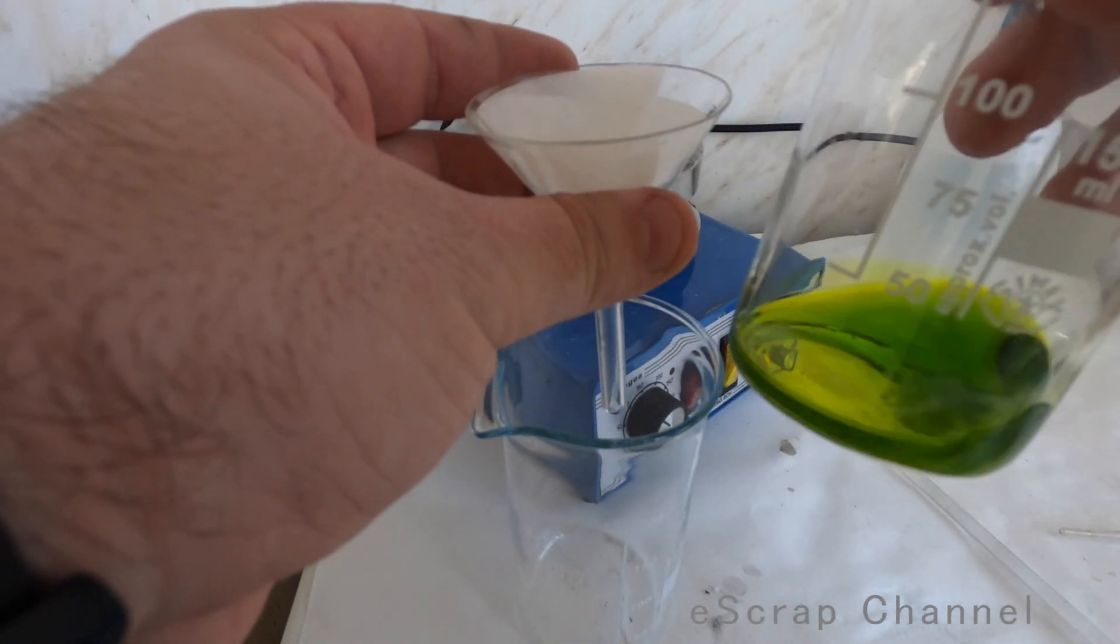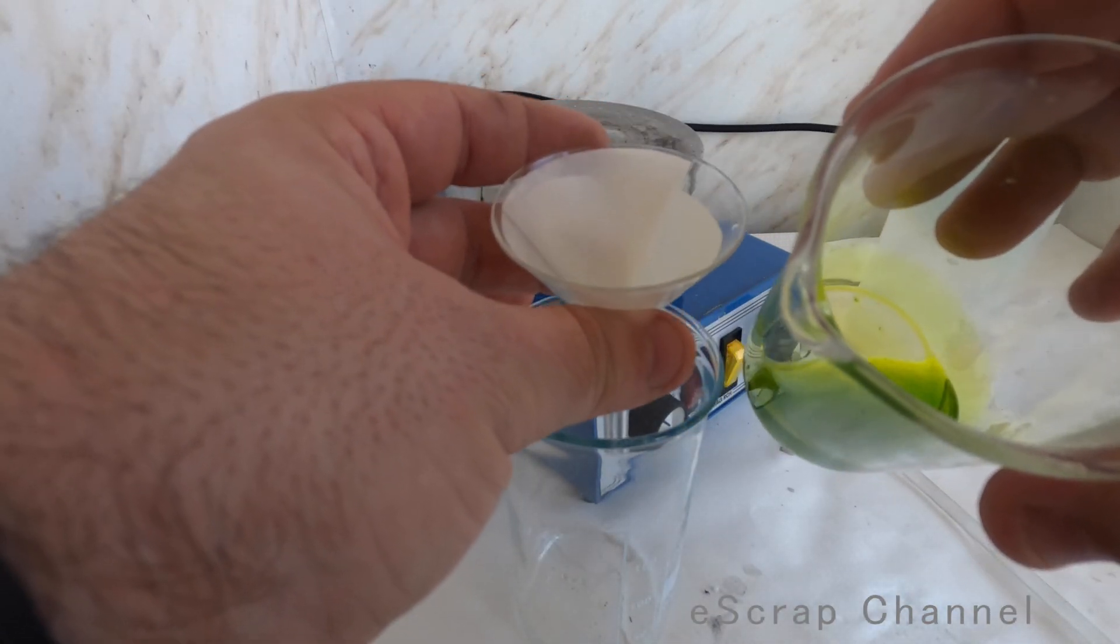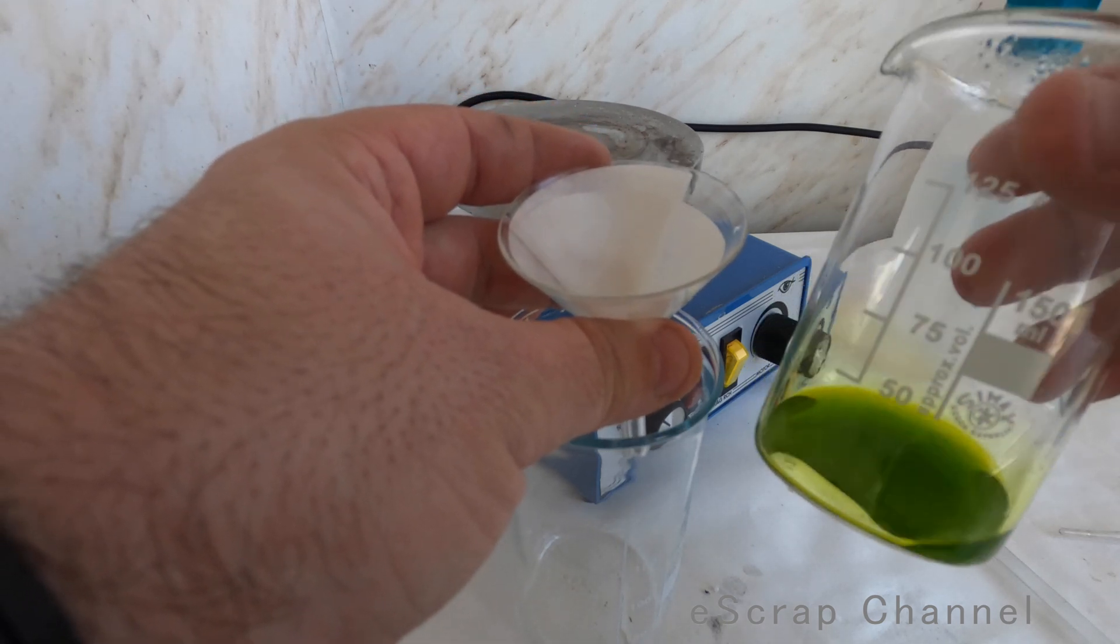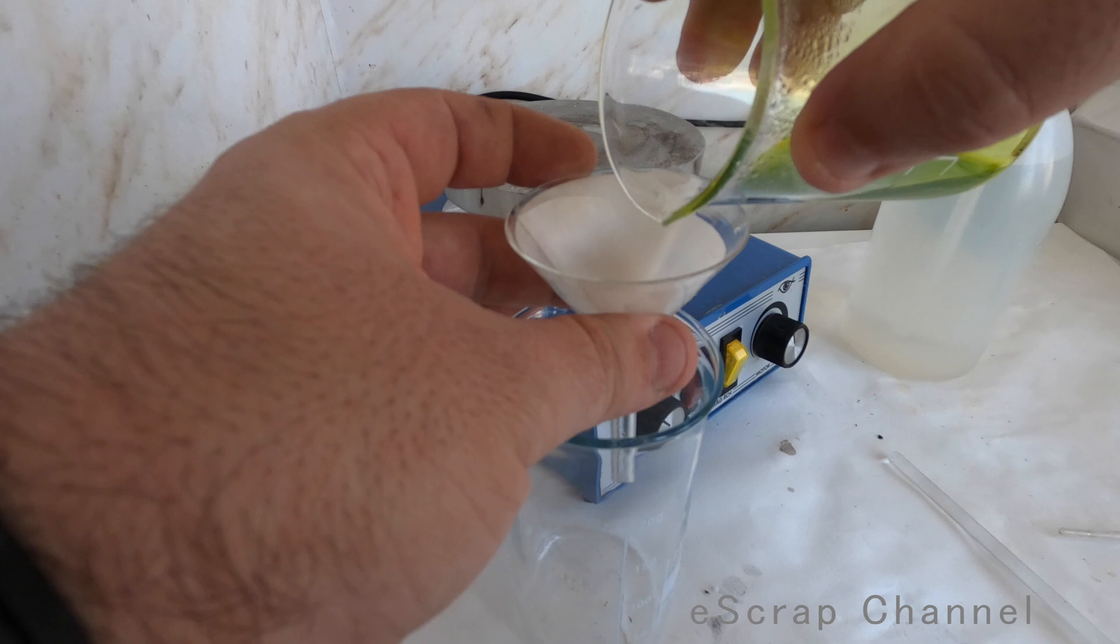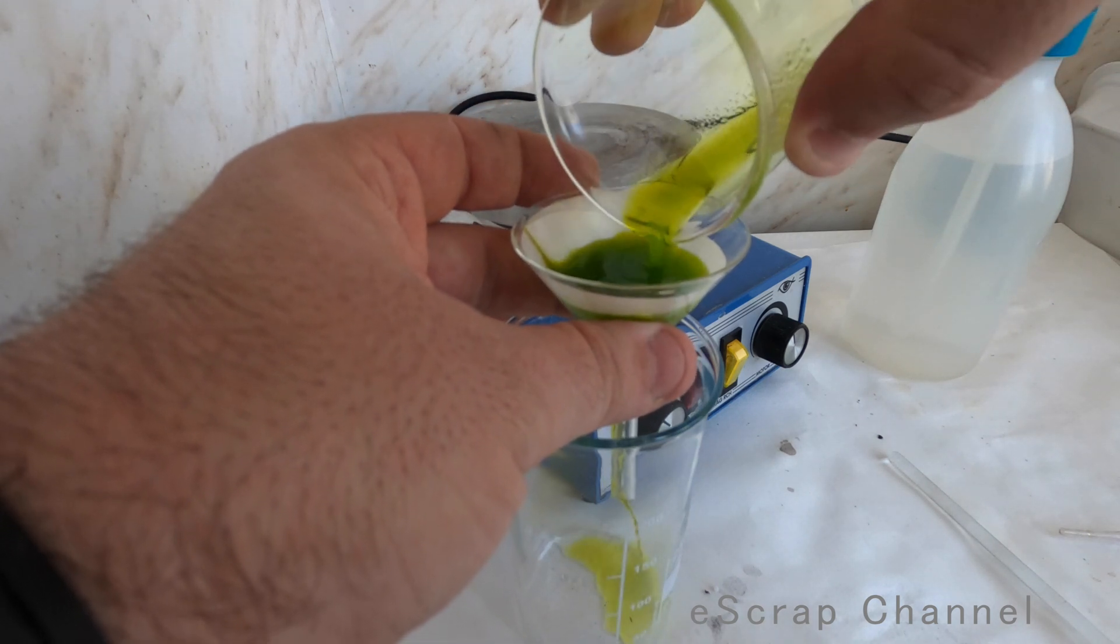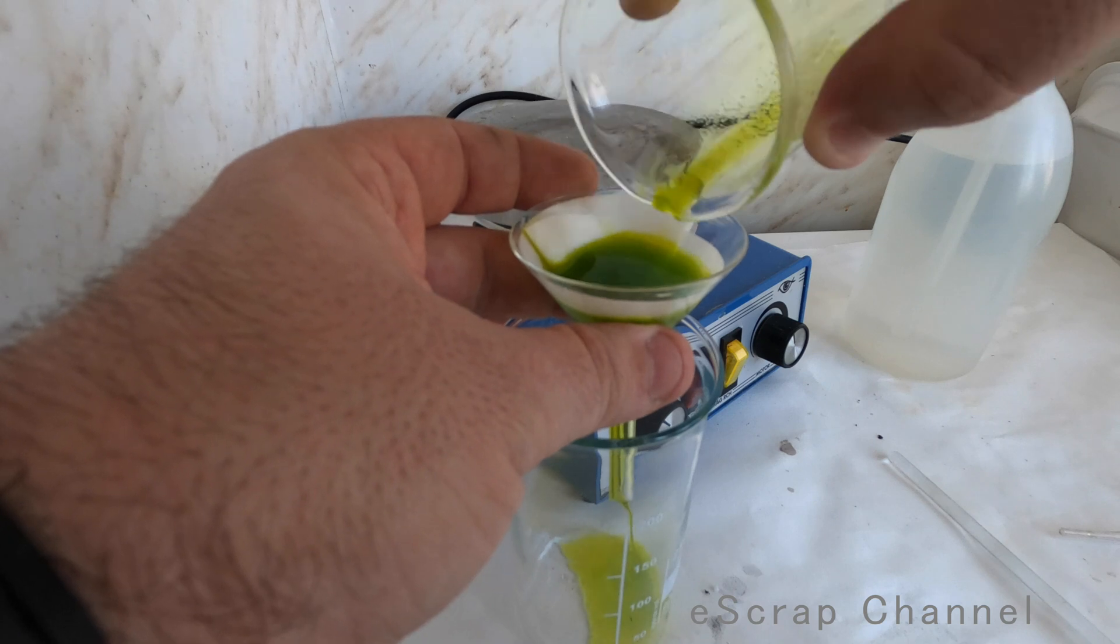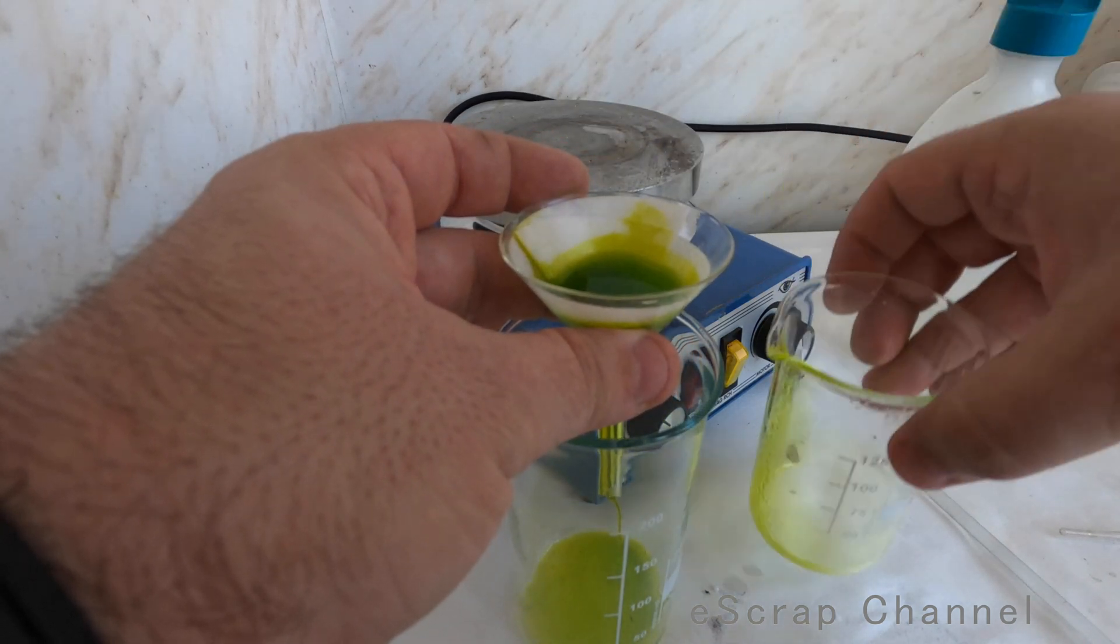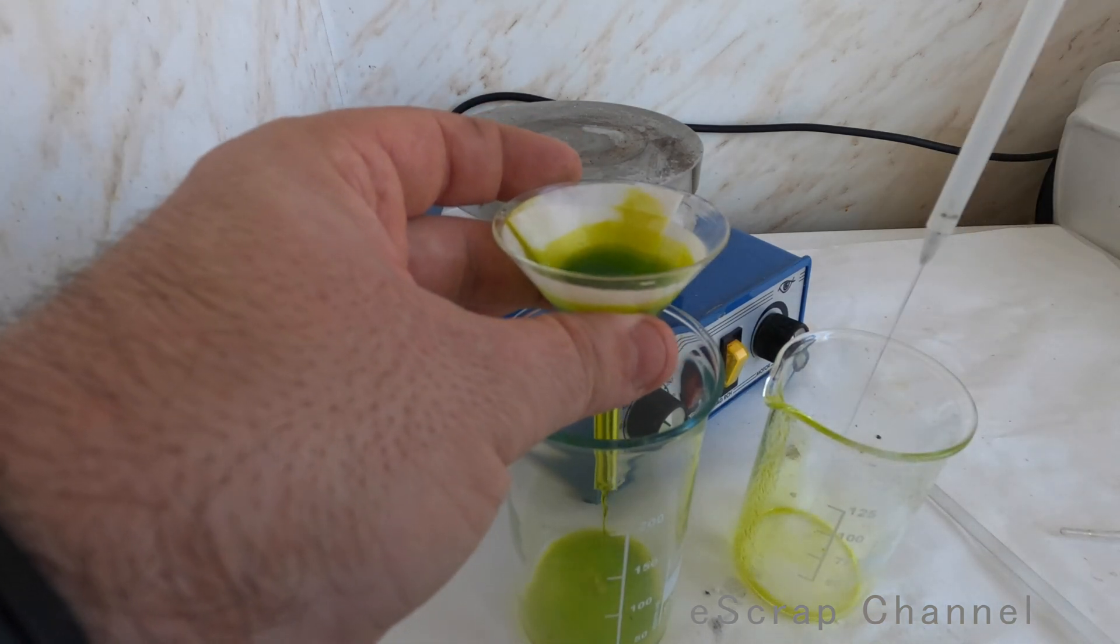Okay guys, so this is our final solution. We have some white material inside. This is probably silver. So I will filter out the gold. It will really quickly filter. As you can see.